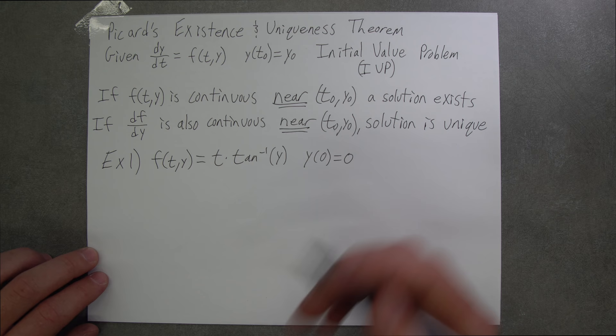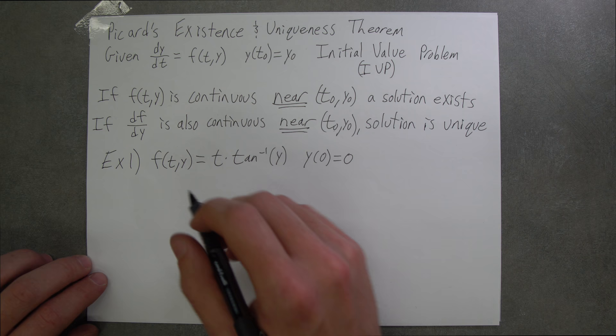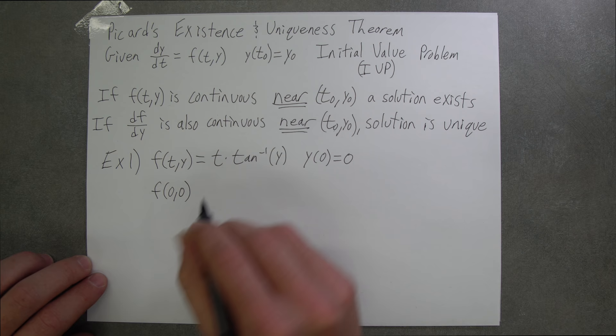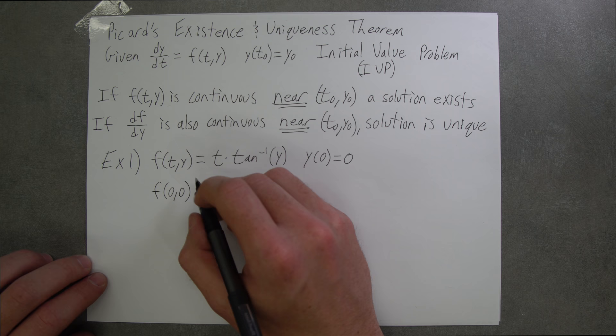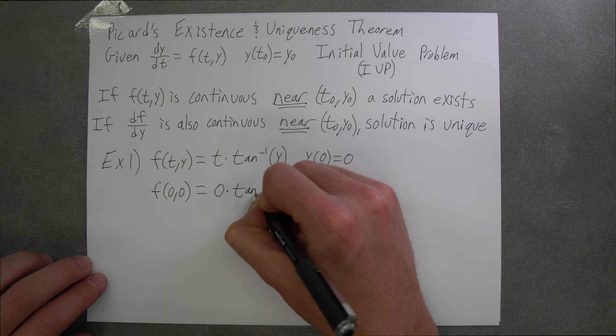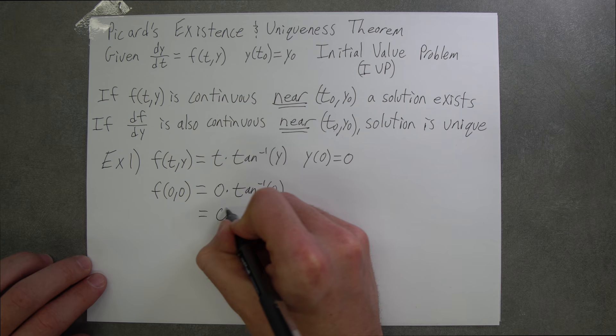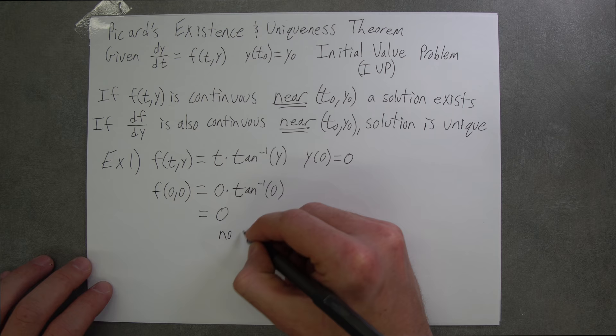So the first thing we have to check is if there's any discontinuities or asymptotes near our initial condition, and if the function exists at our initial condition. So we'll plug it in and we'll get f(0,0): t is 0 and y is 0 for our initial condition. This is equal to 0 times the arctangent of 0, which equals 0.